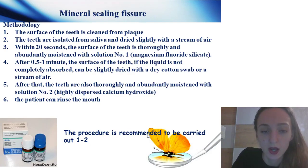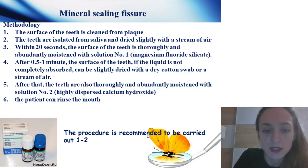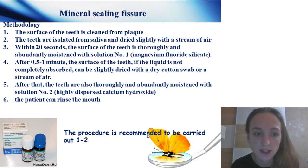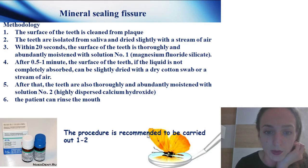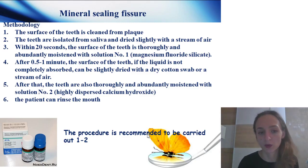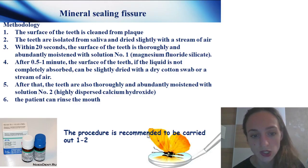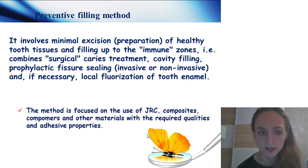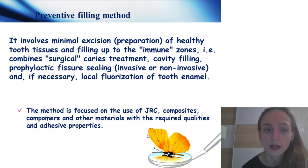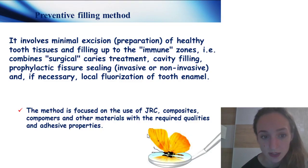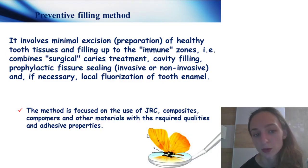Mineral sealant fissure procedure: clean the surface of teeth from plaque, isolate from saliva, and dry slightly with a stream of air. Within 20 seconds, the surface is thoroughly moistened with solution number one. After half to one minute, slightly dry with a dry cotton swab; then apply solution number two and the patient can rinse. Preventive filling method involves minimal excision of healthy tooth tissues and filling up to the immune zone, combining surgical caries treatment, cavity filling, and preventive fissure sealing. If necessary, local fluoridation of tooth enamel can be added.